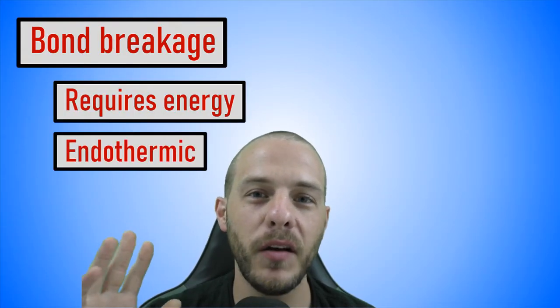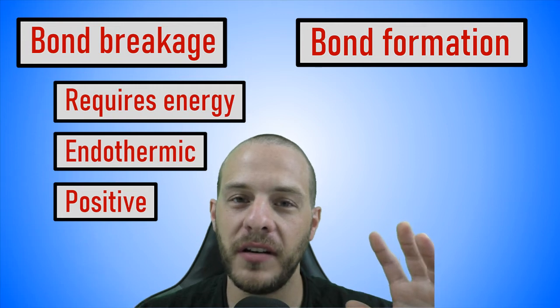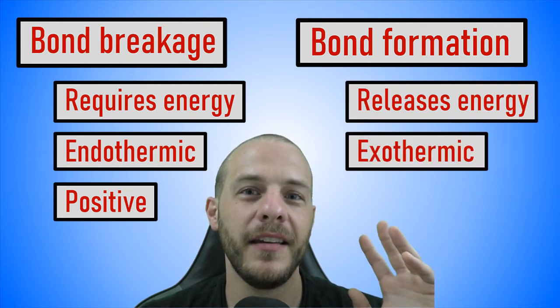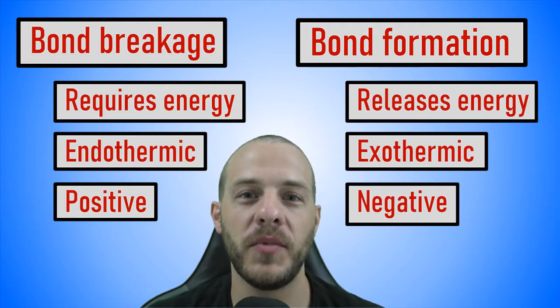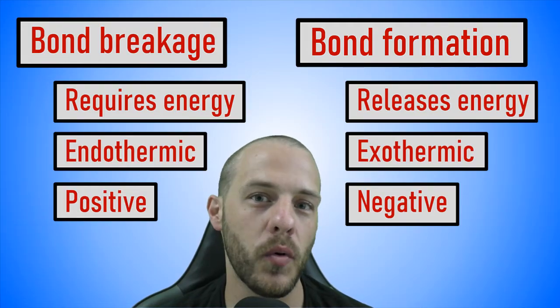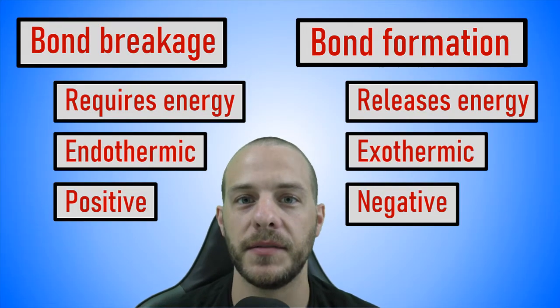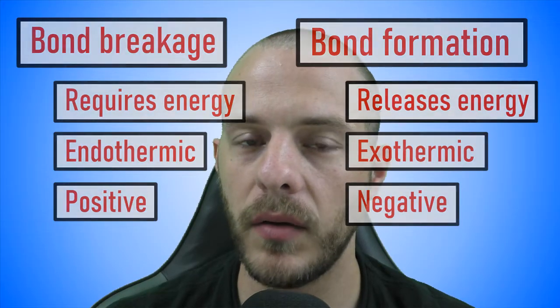On the flip side, the formation of a chemical bond releases energy and is exothermic. So: bond breakage requires energy — endothermic — positive. Bond formation releases energy — exothermic — negative. There's a lot of thermochemistry jargon wrapped up in that, so it's important to have a solid understanding of thermochemistry going into this. Keeping those principles in mind, we're in a pretty good position to estimate the enthalpy change associated with a chemical reaction whose reactants and/or products do not have tabulated standard enthalpies of formation.